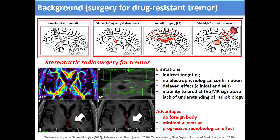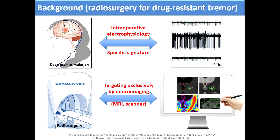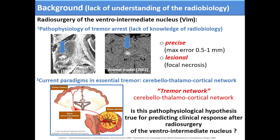The major difference between radiosurgery and deep brain stimulation is that in deep brain stimulation we have intraoperative electrophysiology with the specific signature of the ventro-intermediate nucleus of the thalamus, while in radiosurgery procedures targeting is done exclusively by neuroimaging. When we started this work we didn't have many studies discussing the radiobiology of radiosurgery for tremor. We had only autopsy pieces, from both human bodies and animal models, stating that this is precise and lesional.